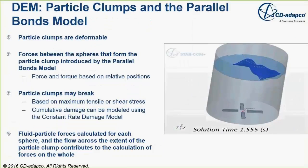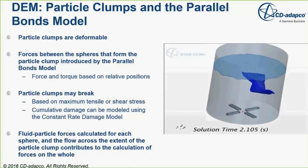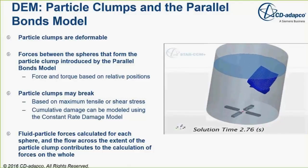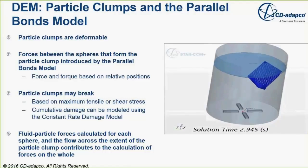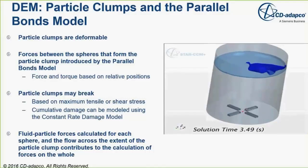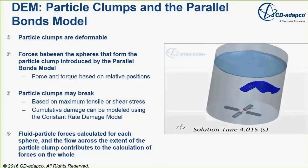For problems requiring flexibility and deformation of the transported phase, a particle clumps and parallel bond model is available. These particle clumps are deformable and can also break once stress exceeds a particular tensile or shear stress threshold. This illustration shows how the action of the fluid field moves the particle clump as well as deforms it.